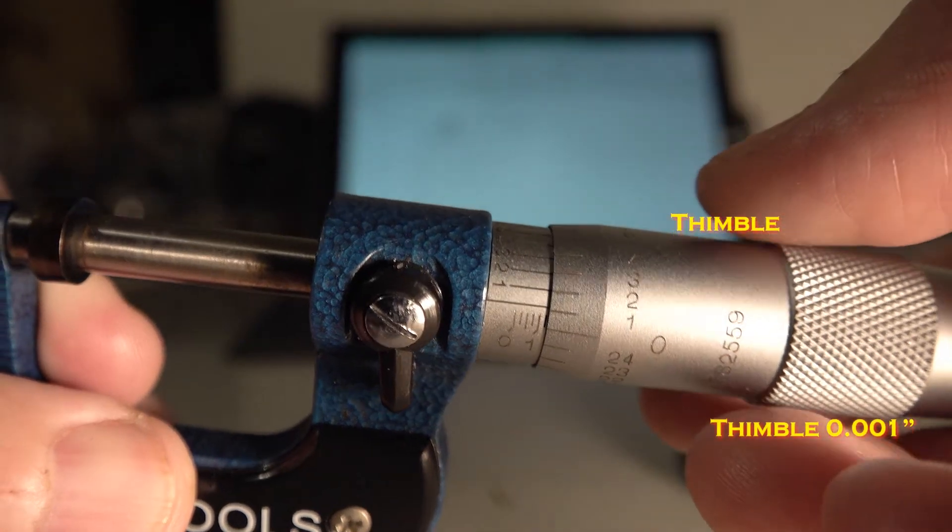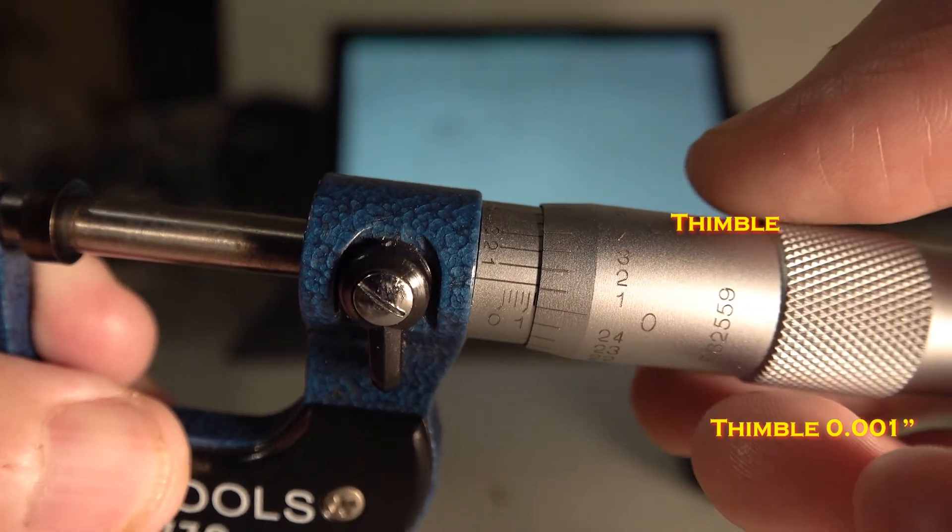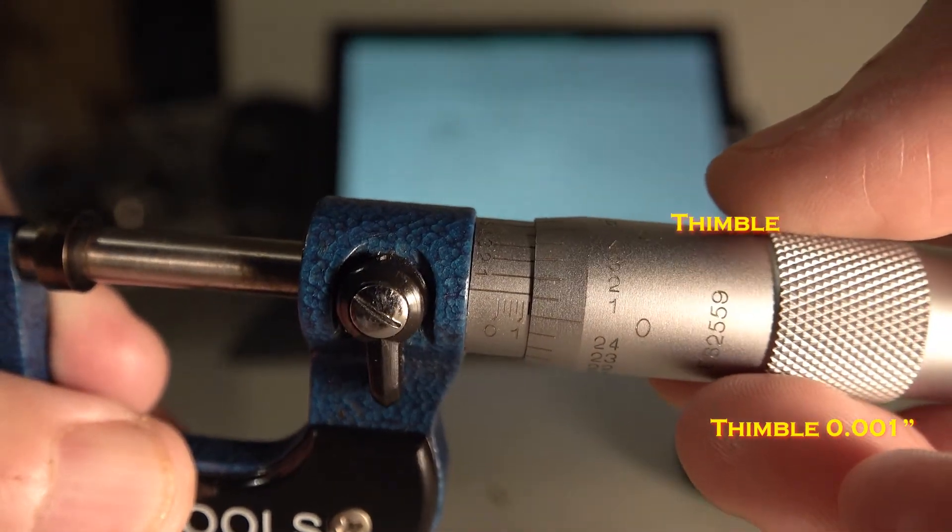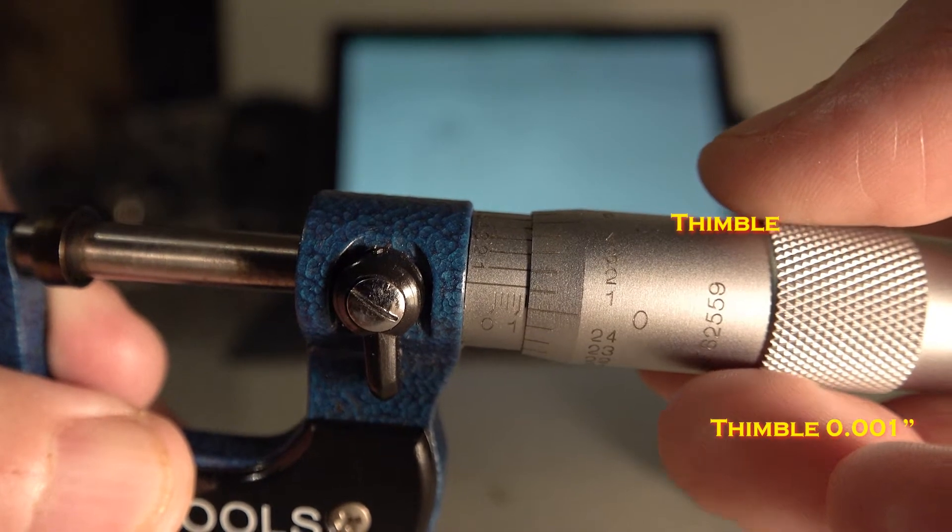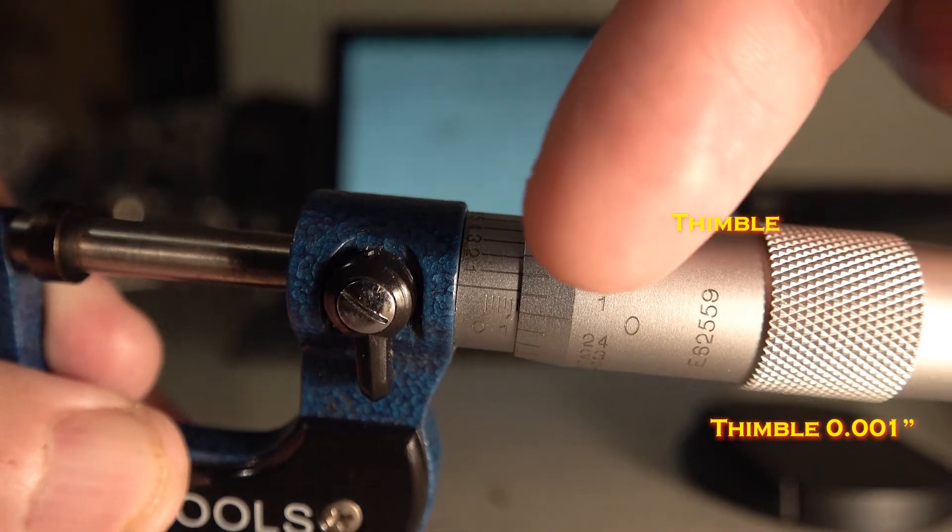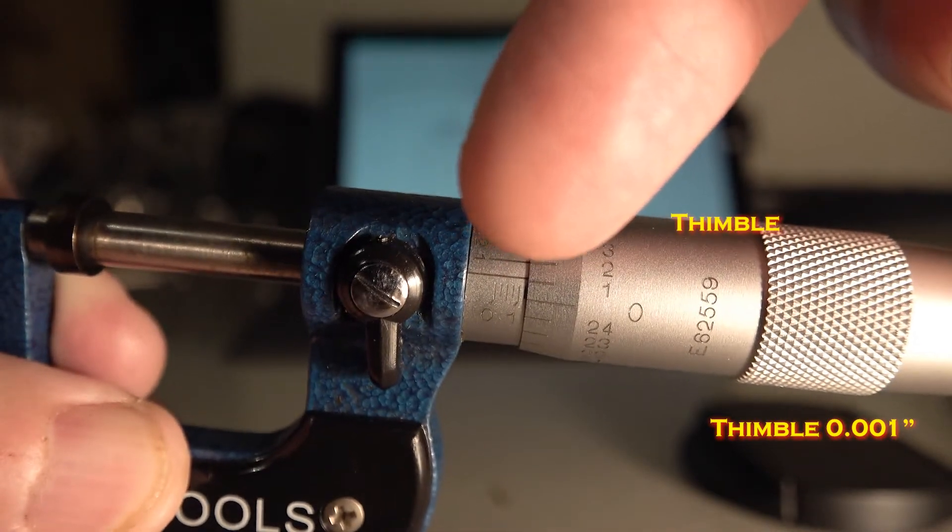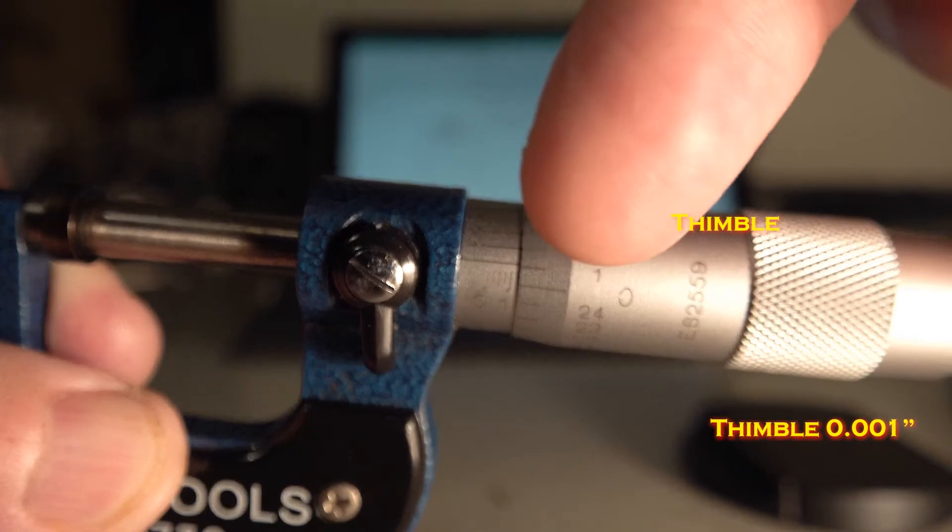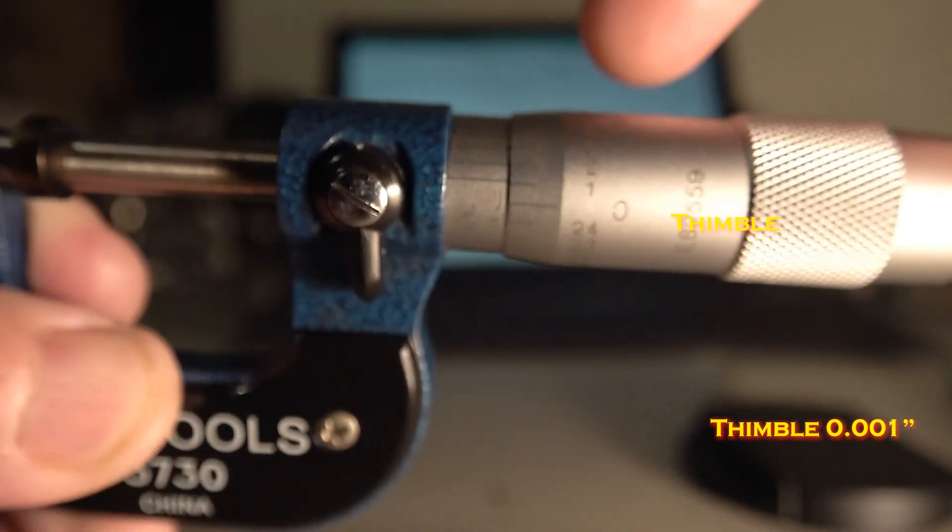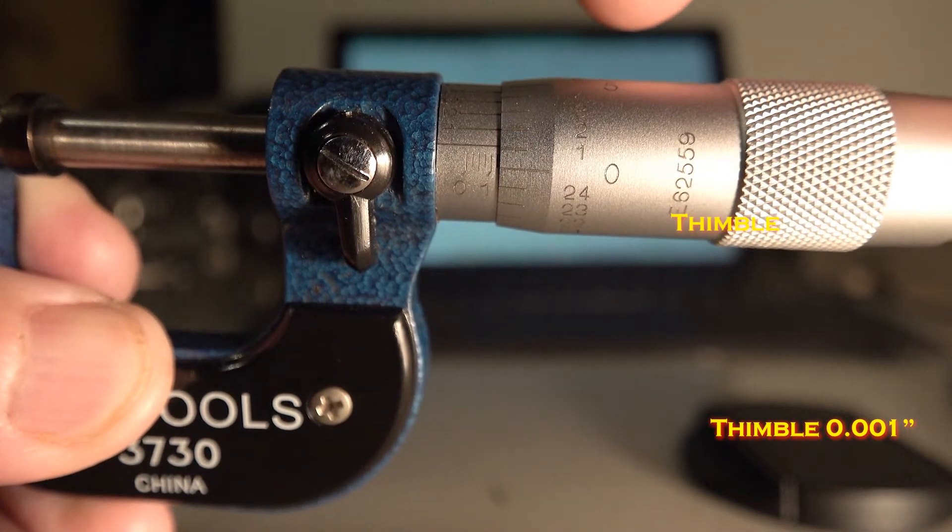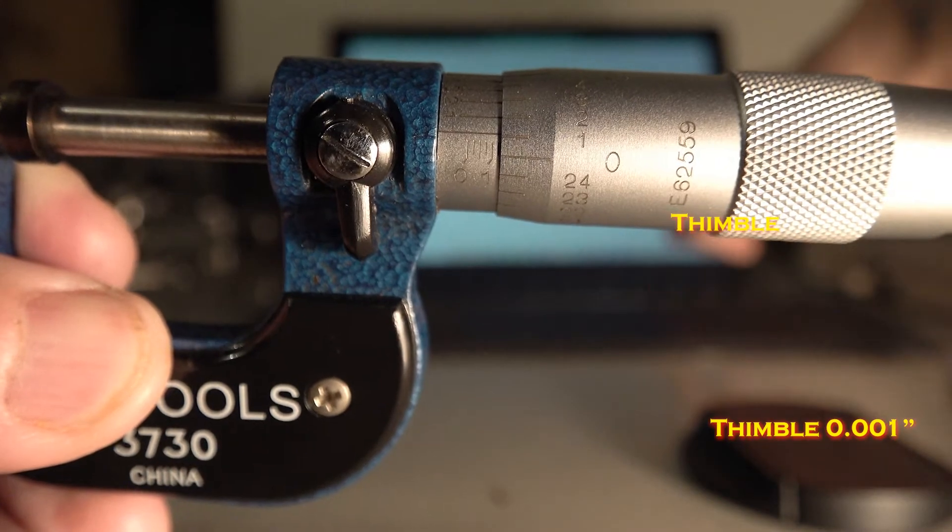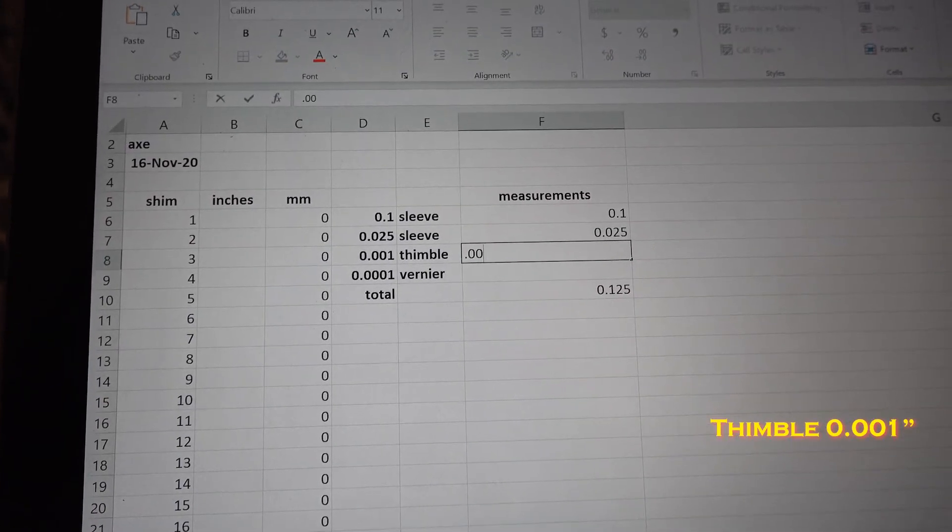And now we want to look at the thimble, which is this part. The last number before the zero line you can see is that 1, and it's right below the zero line. So 1 is the number we're taking away from there, and that 1 represents another thousandth. So we're going to enter 0.001 into the spreadsheet.